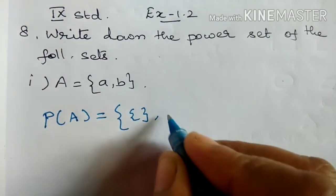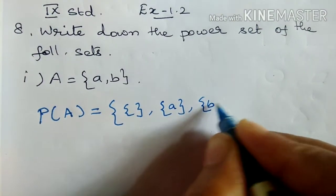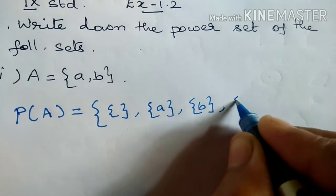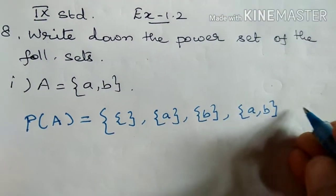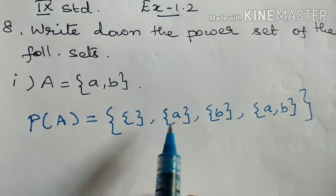Next, {a}. Set bracket. Next, {b}. Next, {a, b}. This is the power set of A.